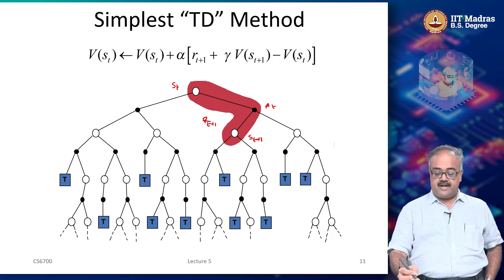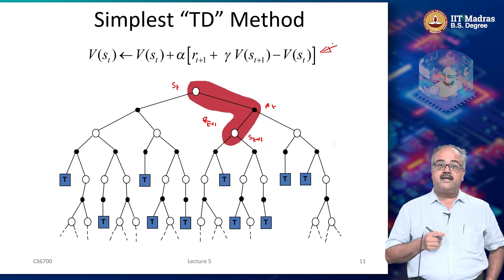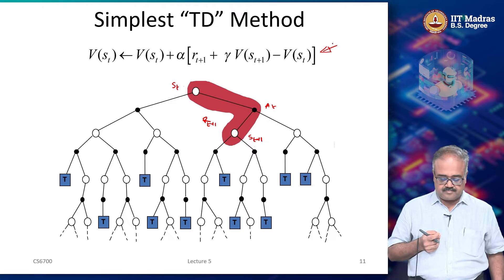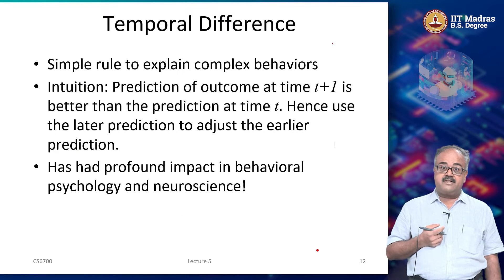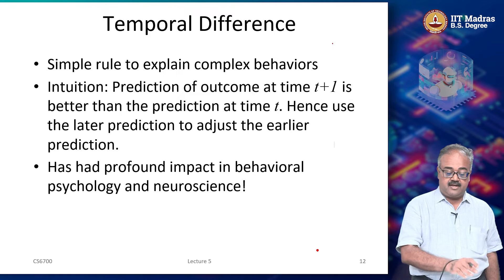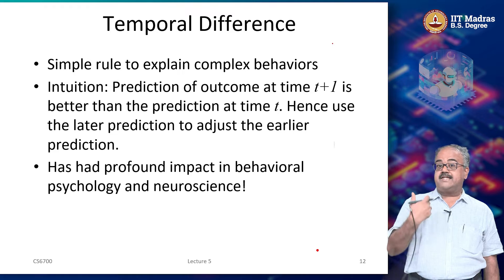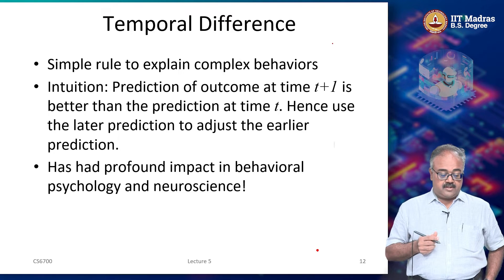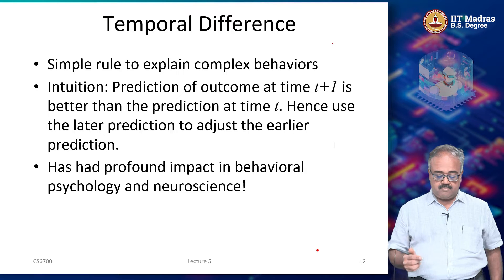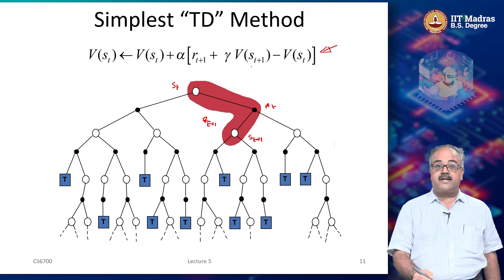This is essentially the simplest TD update, and we will see how we come to this in a bit. As mentioned at the beginning, temporal difference learning is a very simple rule but can potentially explain very complex behaviors. The intuition is that the prediction of the outcome — the expected return at state t — forms the basis of the update.